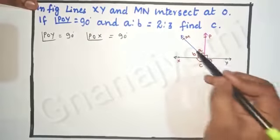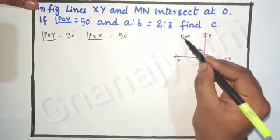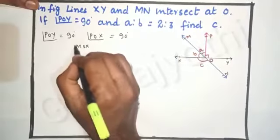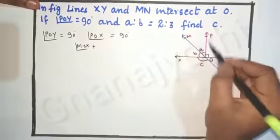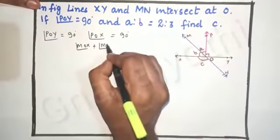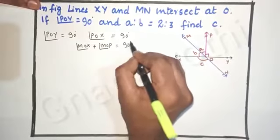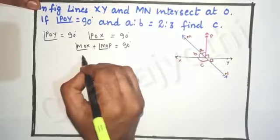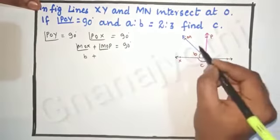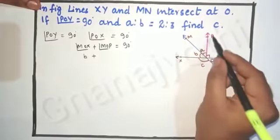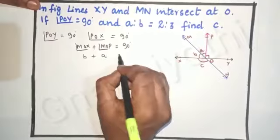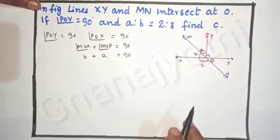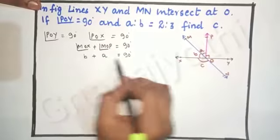Angle POX is the sum of two angles — that is, the sum of angle MOX plus angle MOP equals 90 degrees. So angle MOX equals b and angle MOP equals a, therefore b plus a is equal to 90 degrees. Now let us find the value of b and a.